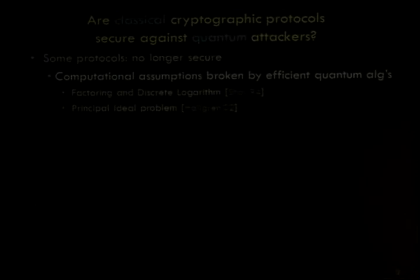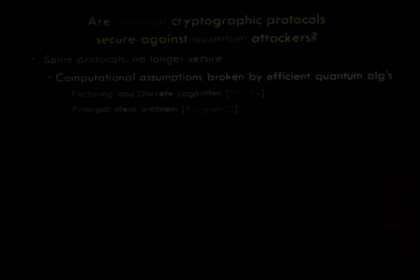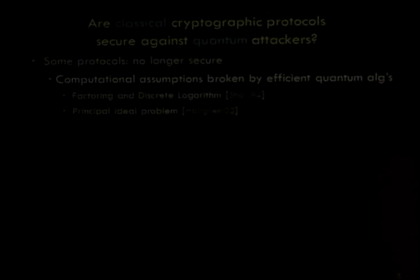For example, the well-known Shor's algorithm for factoring and discrete log, and also Hallgren's algorithm for the principal ideal problem. Some may argue that in order to implement these quantum algorithms, we need fully mature quantum computers, which are way beyond the current technology. So why should we care?